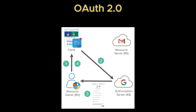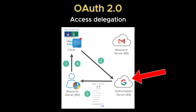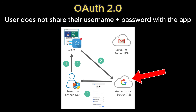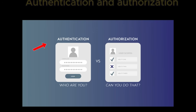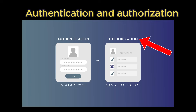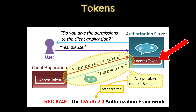OAuth 2.0, or open authorization, is an open standard for access delegation that allows applications to securely access resources on behalf of a user without directly handling their credentials. It's considered the backbone of secure authorization on the modern web, used everywhere from Google sign-in to GitHub integrations to APIs powering mobile apps. The key idea is to separate authentication — which verifies who you are — from authorization — which is what you're allowed to do. Instead of the user giving an app their username and password, OAuth allows them to grant limited access using tokens, which act as secure temporary credentials. These tokens represent delegated permissions and can be revoked or scoped precisely, improving security and control.